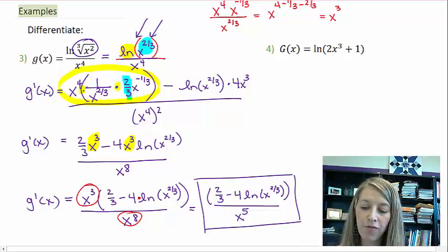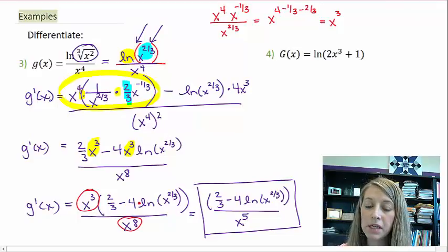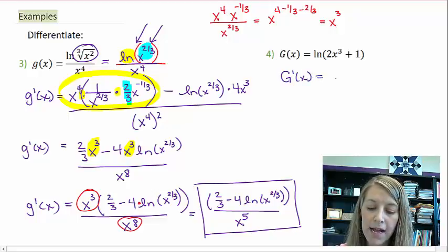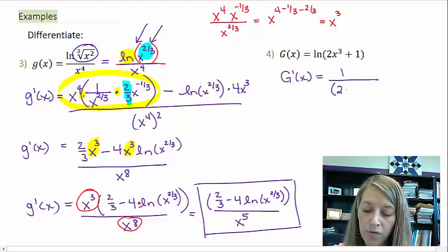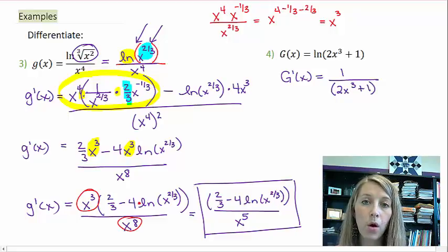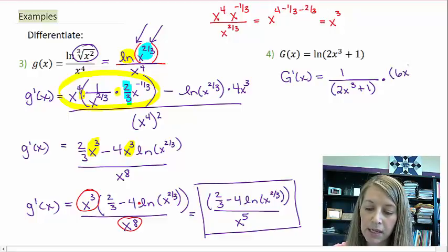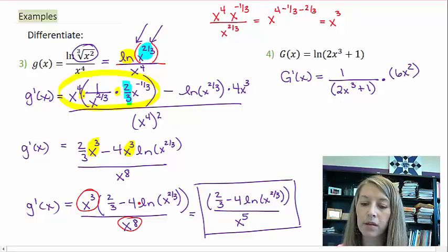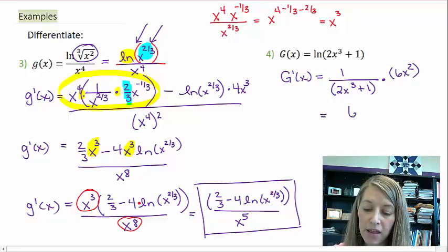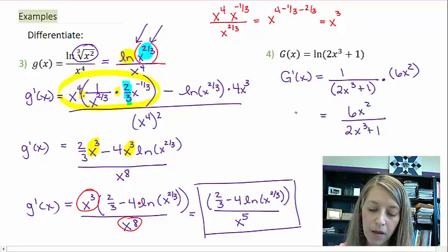The derivative of example 4: I already said there is a chain rule. The derivative of natural log is 1 over, so I see 1 over 2x to the 3rd plus 1 — 1 over the inside function stays the same — times the derivative of the inside function. The derivative of the inside is 6x squared. To simplify, I can just rewrite it as 6x squared over 2x to the 3rd plus 1. That chain rule was not so bad.